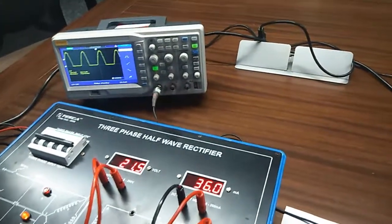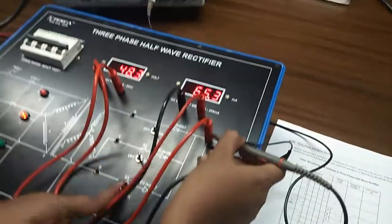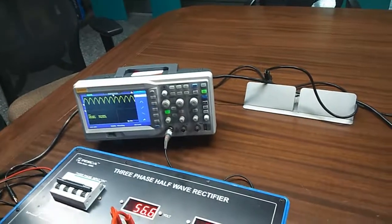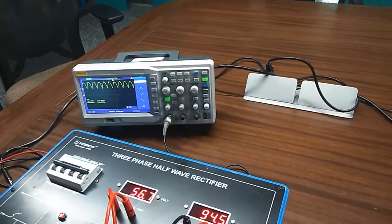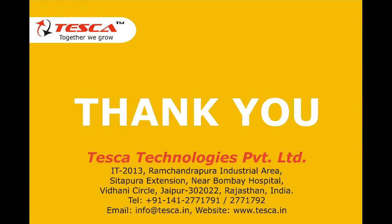For half-wave rectification process, we will need only one diode. If we turn on all the diodes like this, we will get full-wave rectification. Thank you.